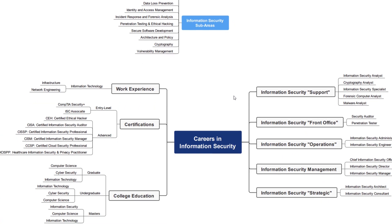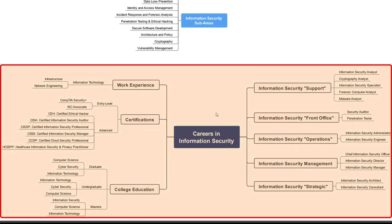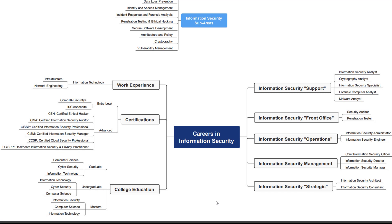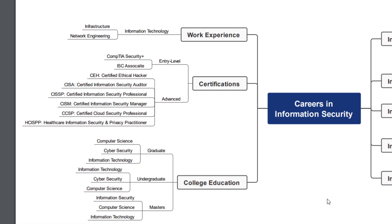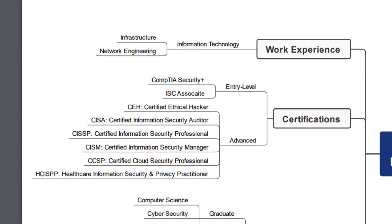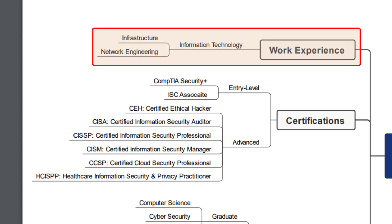Next we have the overall careers in the information security area. What I have broken down here is how to get into information security on the left side, and then the different areas where you can work. We'll start on the left-hand side of this map. So how can you get into information security? At the top I start with work experience. If you work in information technology and have a good background in infrastructure or network engineering, that's a great entry point to get into information security.